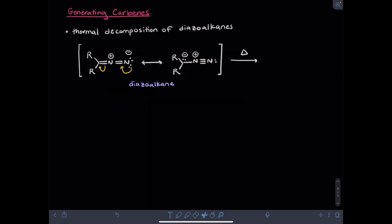One way to generate a carbene is to heat a diazoalkane. Diazoalkanes feature a carbon attached to two nitrogens, and there are two resonance forms. In one of them, the carbon has a pi bond to a central nitrogen and the end nitrogen is anionic. To get to the other resonance structure, you could bring down a lone pair from the anionic nitrogen to form a nitrogen-nitrogen triple bond, and take the electrons from the nitrogen-carbon pi bond and bring them to carbon.